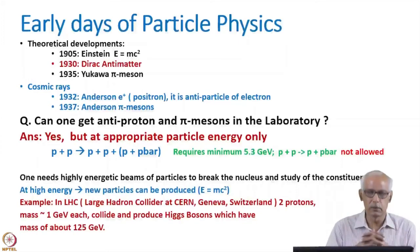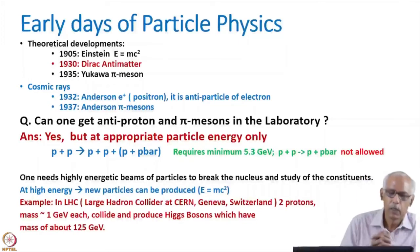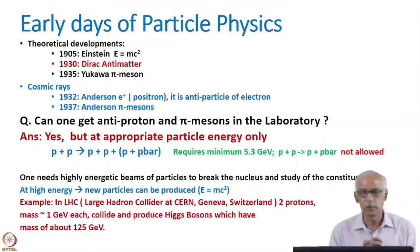So what were the sources of high energy particles? You can see that, although theoretically, right in the beginning of 1905, Einstein gave this equation. And Dirac actually predicted antimatter. And pions were predicted in 1935. But the source of studies for particle physics or doing the experiment at that time was cosmic rays. And cosmic rays have energies right from very small energy, electron volts to up to TeVs.